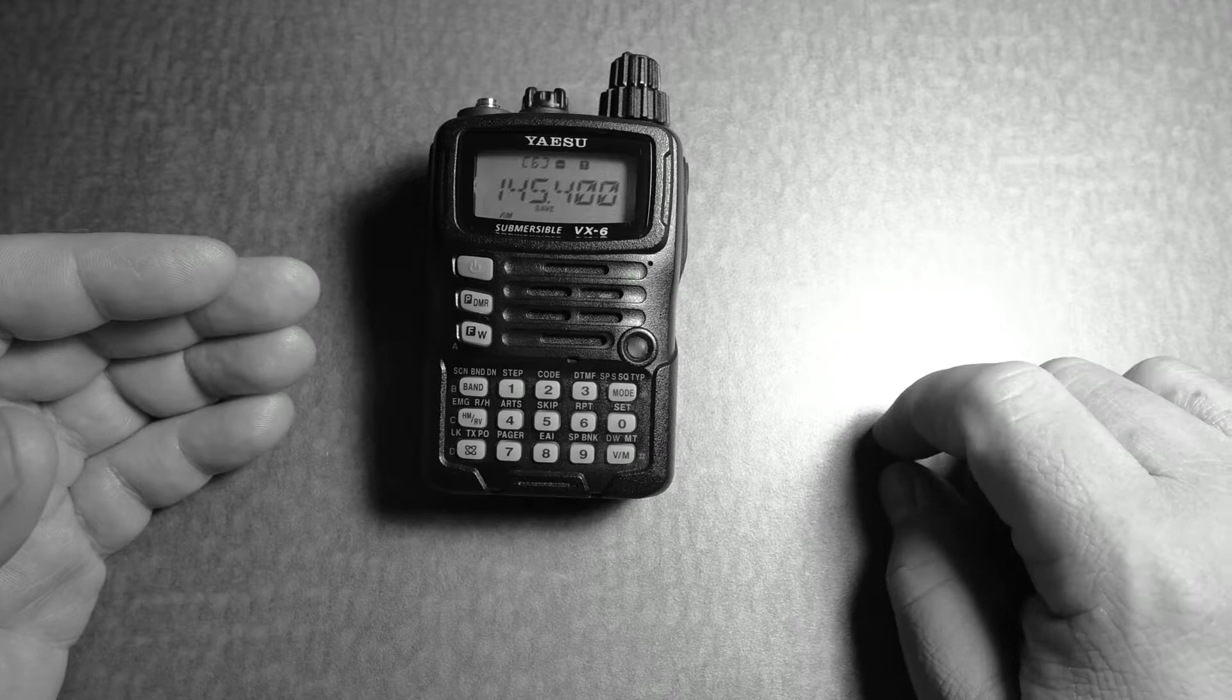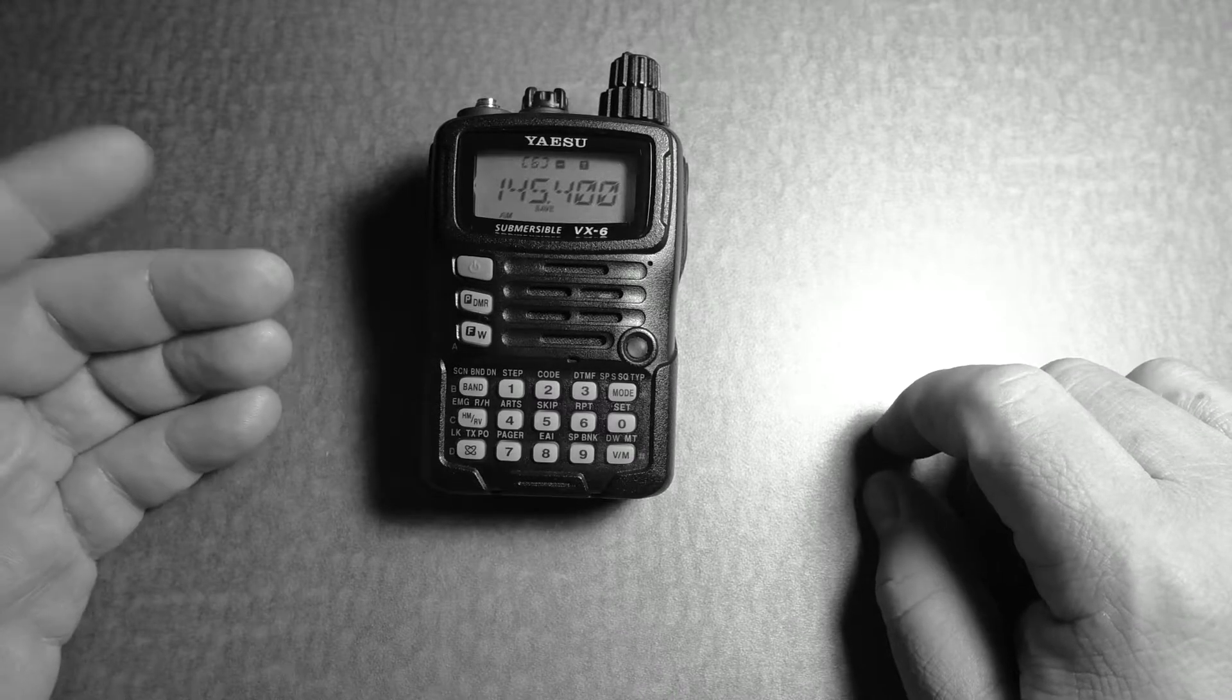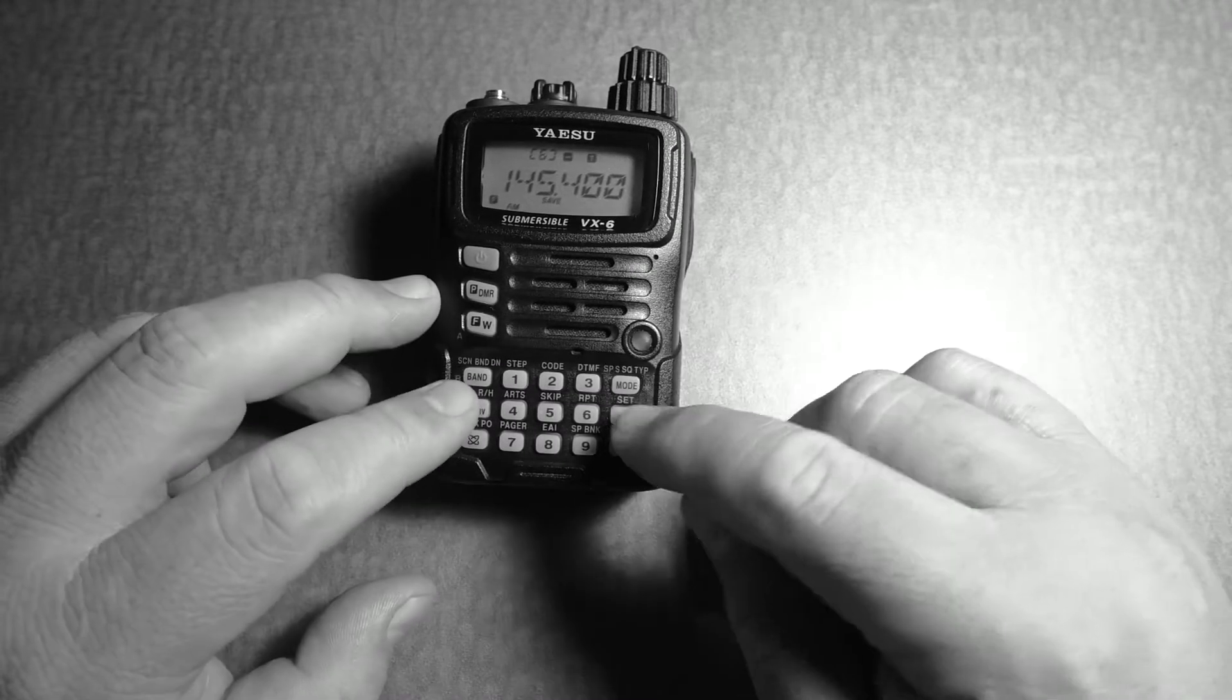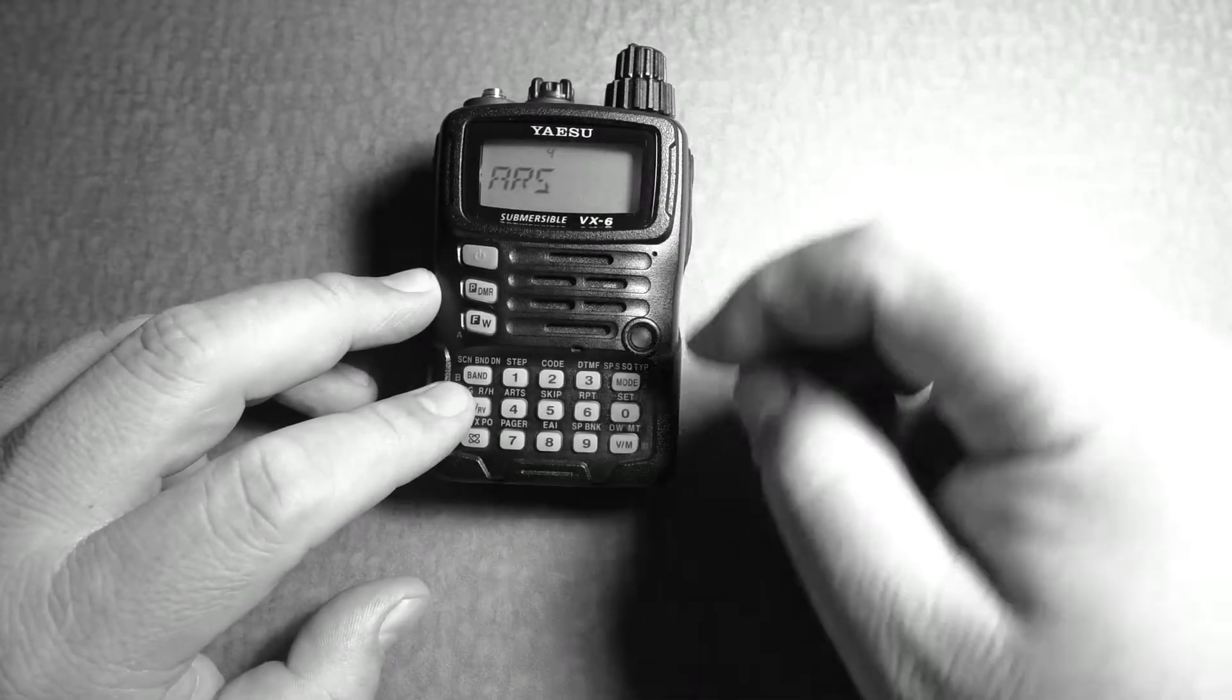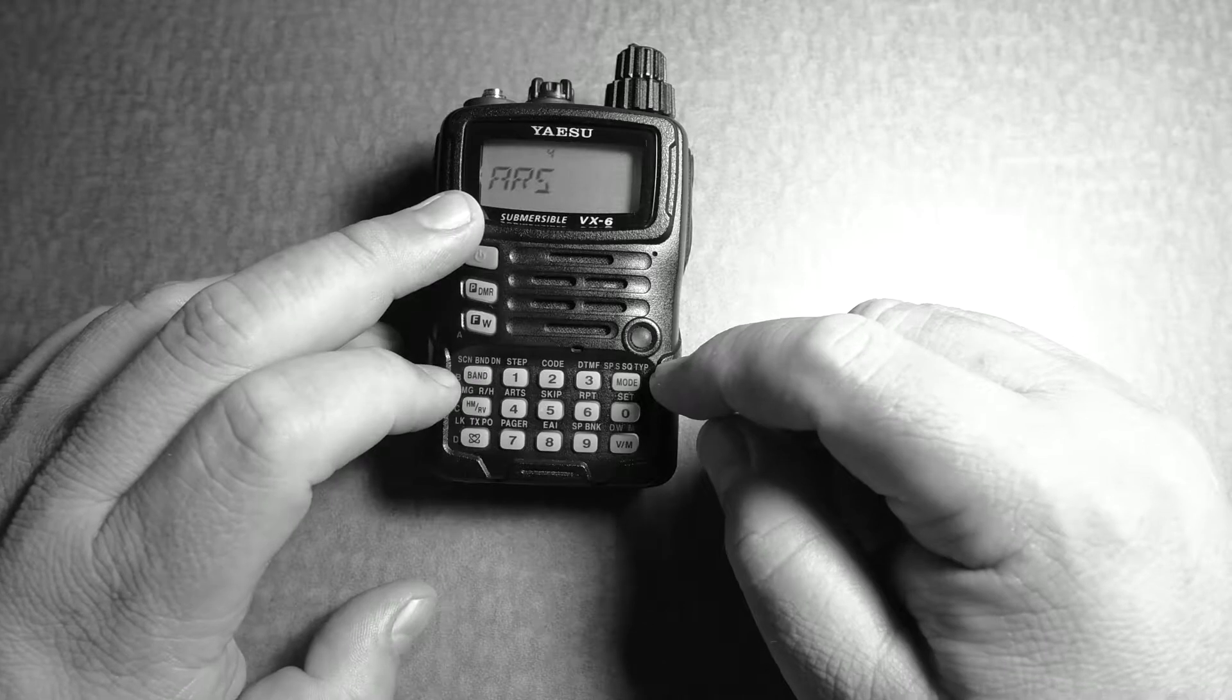One thing is you need to turn off the ARS if you have it on. So how do we do that? Press the F button, the 0. It's already on number 4, so move the dial to number 4. ARS, automatic repeater shift.